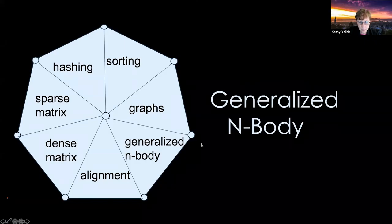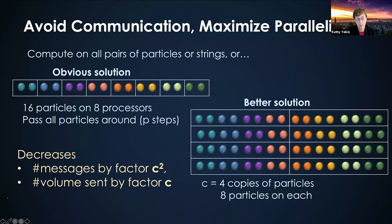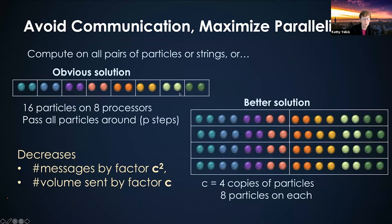Generalized N-body refers to this kind of all-to-all computation. In a naive N-body problem, you parallelize by dividing particles over the processors and passing other particles around to compute all interactions. But that's not optimal from a communication standpoint. A two-dimensional algorithm that divides the iteration space in two dimensions turns out to be better both in theory and in practice. It's better in theory because you reduce the number of messages by the number of copies you're making of the data, and you also reduce the volume sent by a factor C.